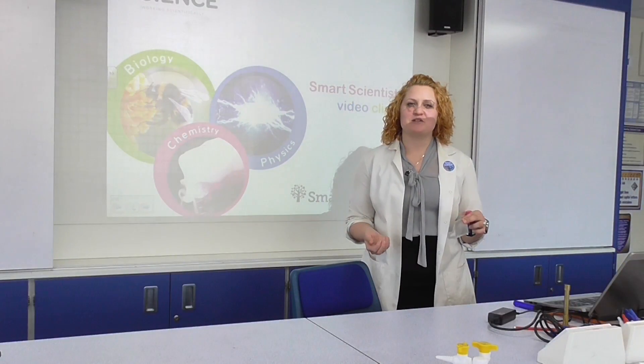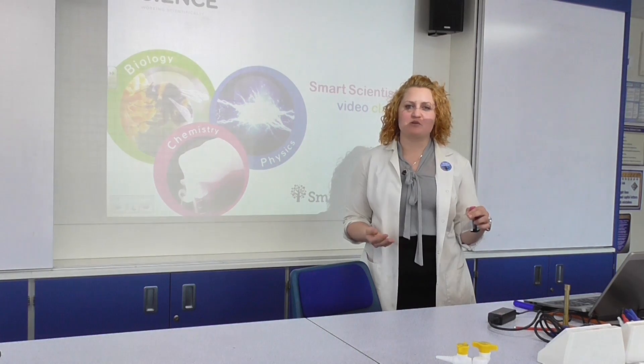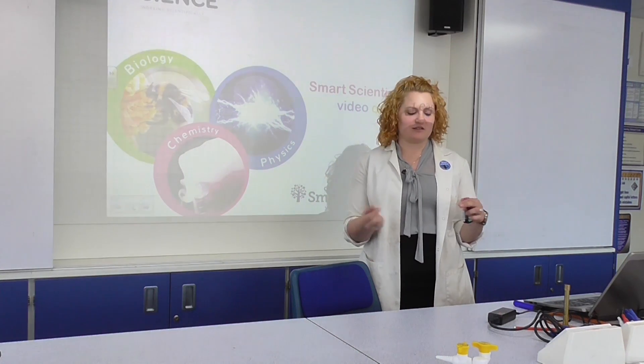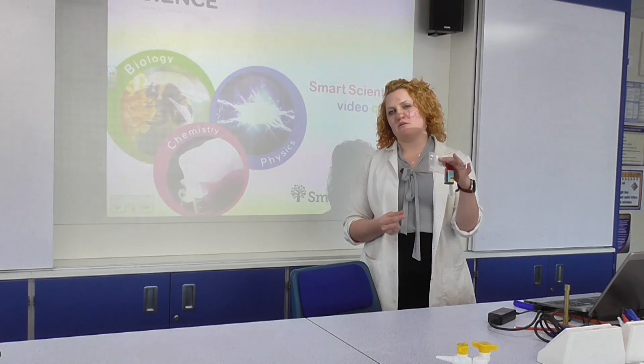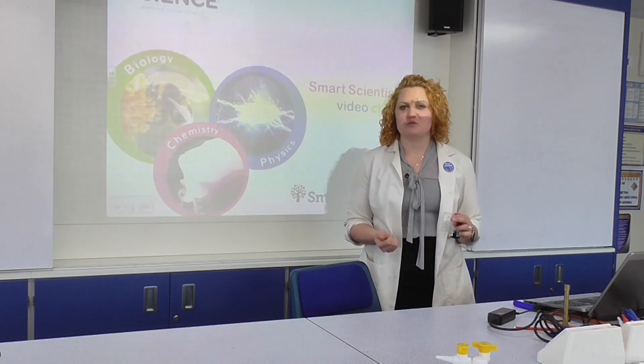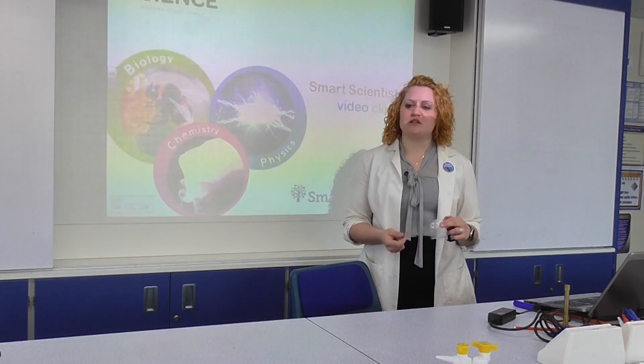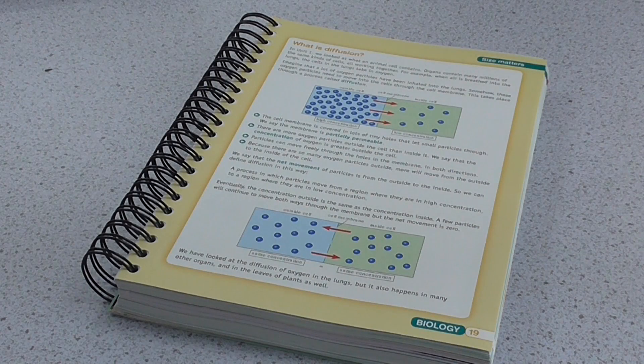This is a smart way to show diffusion in cells using raisins, food dye, and flower rehydration balls, relating to unit two in Smart Science.